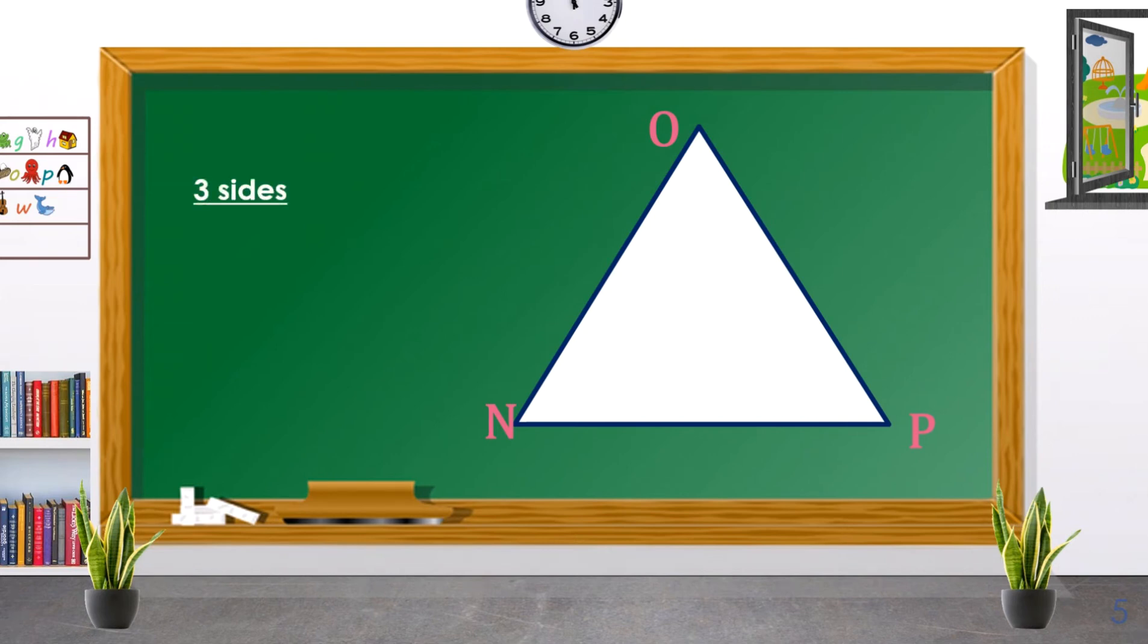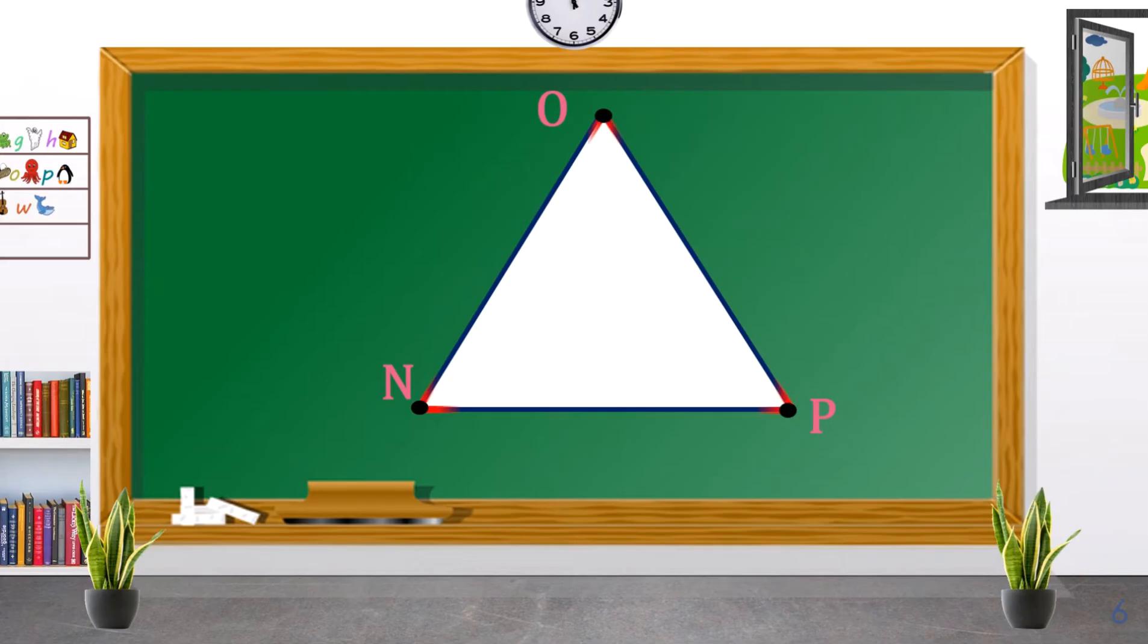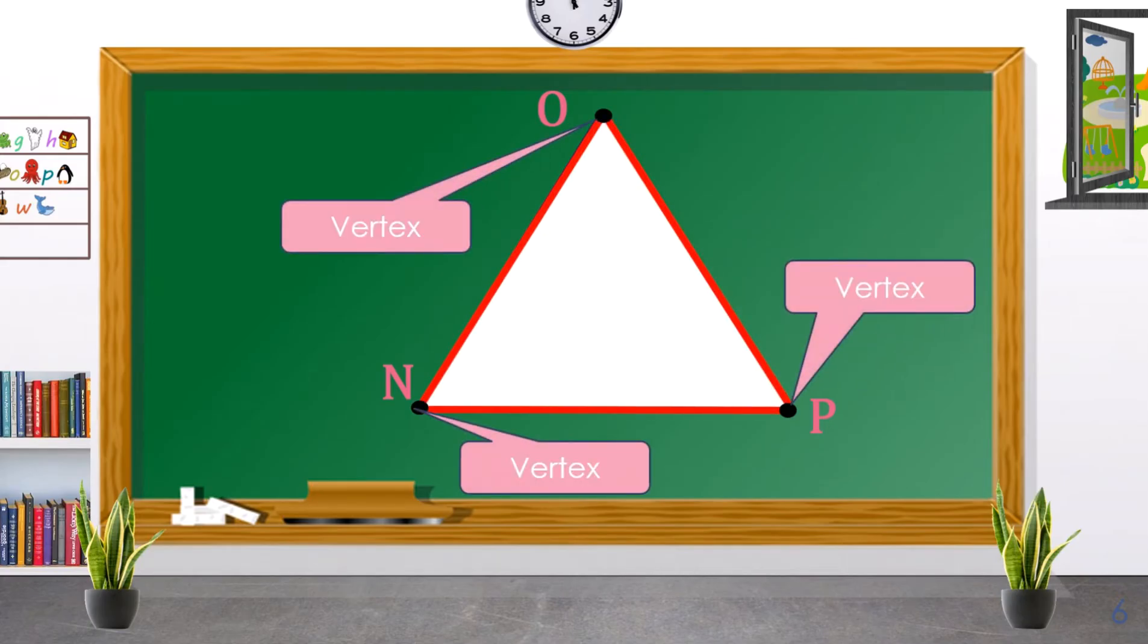A triangle has three sides or three line segments. We can name it as line segment OP, line segment ON, and line segment NP. Where the line segments meet is called a vertex. The vertices are point O, point N, and point P.